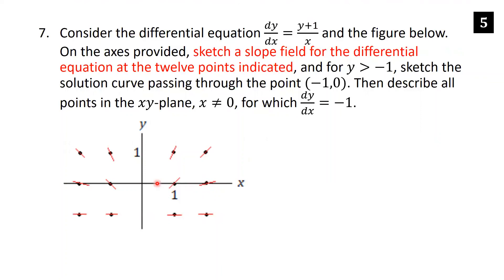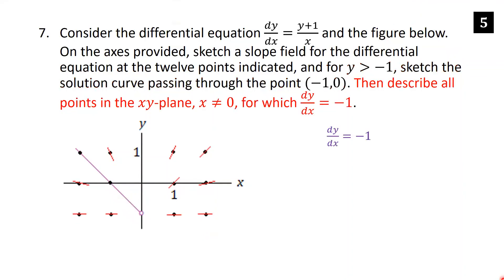For the third part, we set (y+1)/x = −1. Multiplying both sides by x gives y+1 = −x. Subtracting 1 from each side yields y = −x − 1, which is a line in slope-intercept form with slope −1 and y-intercept −1. All points satisfying this equation (with x ≠ 0) are the answer.